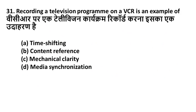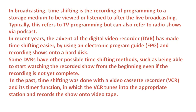Question 31: Recording a television program on a VCR is an example of — Option A: Time shifting, Option B: Content reference, Option C: Mechanical clarity, Option D: Media synchronization. The right answer is Option A — Time shifting. Recording a television program on a VCR is known as time shifting. Remember this.